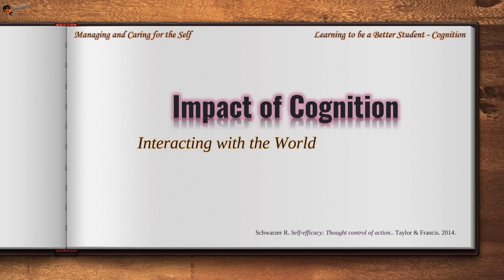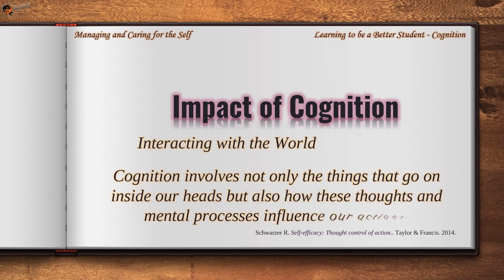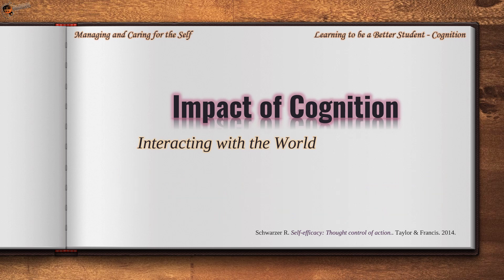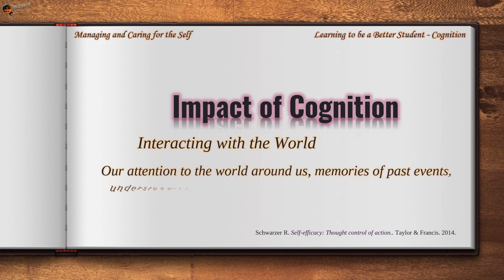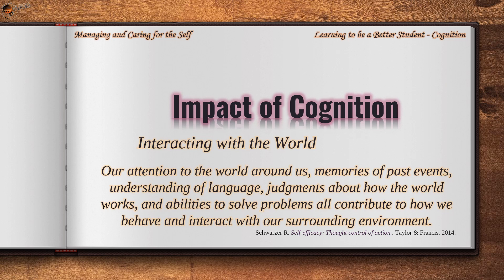Cognition involves not only the things that go on inside our heads, but also how these thoughts and mental processes influence our actions. Our attention to the world around us, memories of past events, understanding of language, judgments about how the world works, and abilities to solve problems all contribute to how we behave and interact with our surrounding environment.